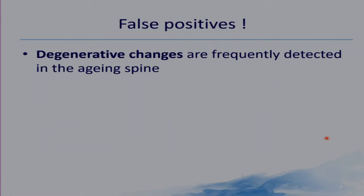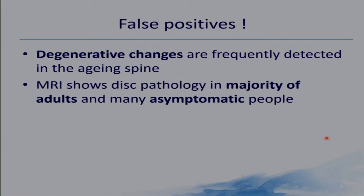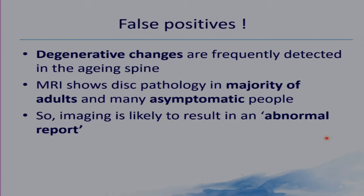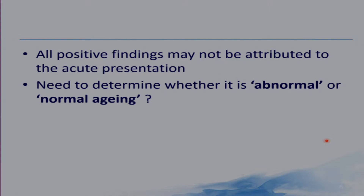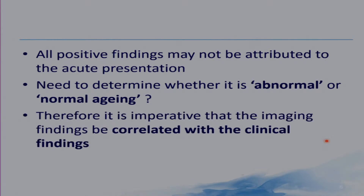Degenerative changes are frequently detected in the aging spine. MRI shows disc pathology in the majority of adults and many asymptomatic people. Imaging is likely to result in an abnormal report, and all positive findings may not be attributed to the acute presentation. We need to determine whether it is actually abnormal or just normal aging. Therefore, it is imperative that the imaging findings be correlated with the clinical findings.